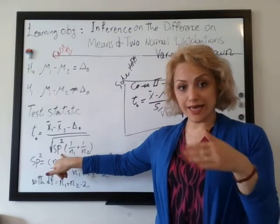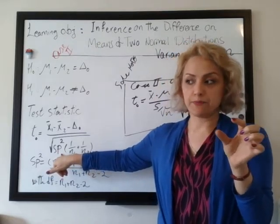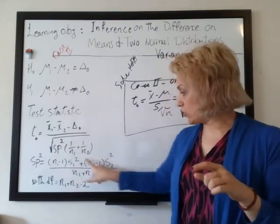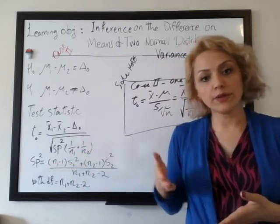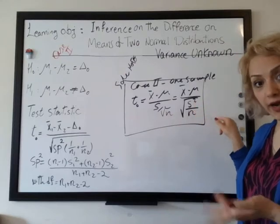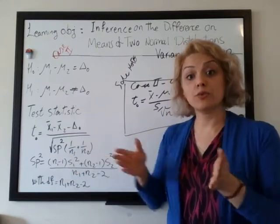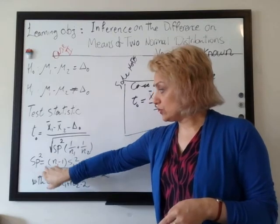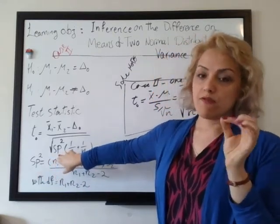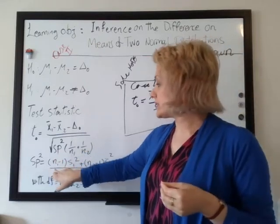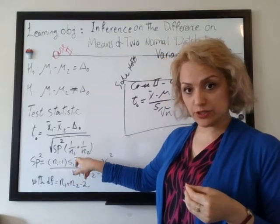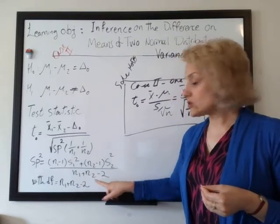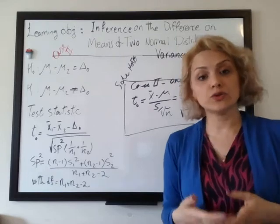We have sp — s-pooled. We pool the variances. So sp² is the pooled variance: sp² equals (n1 minus 1) times s1² plus (n2 minus 1) times s2², all divided by n1 plus n2 minus 2. This n1 plus n2 minus 2 is also equal to the degree of freedom. And then we multiply by 1/n1 plus 1/n2, similar to having s² times 1/n in the one-sample case.